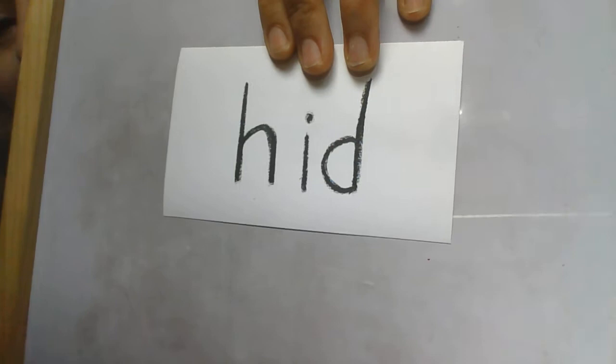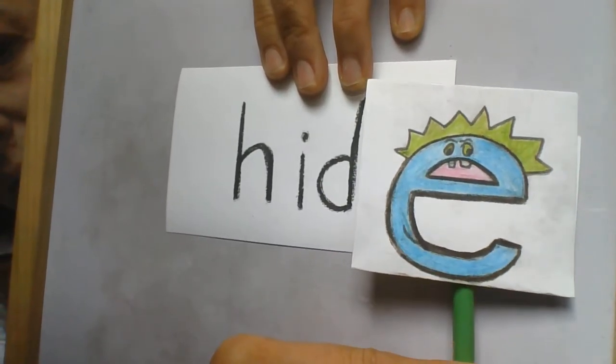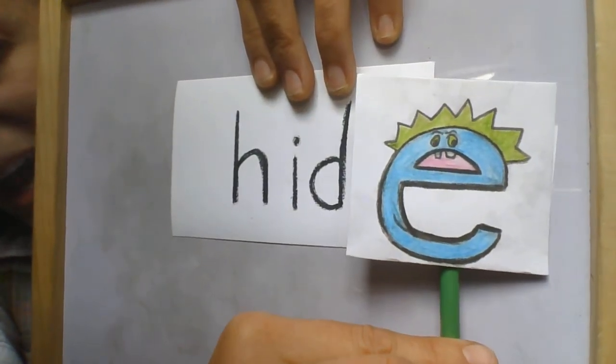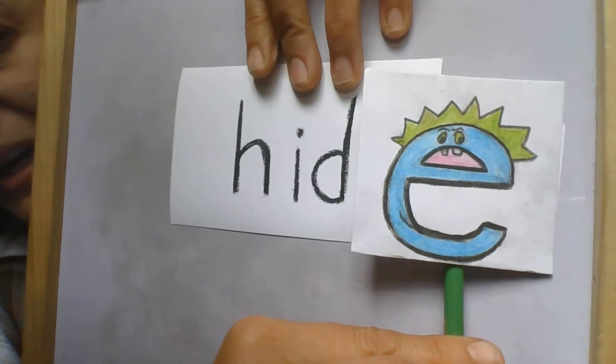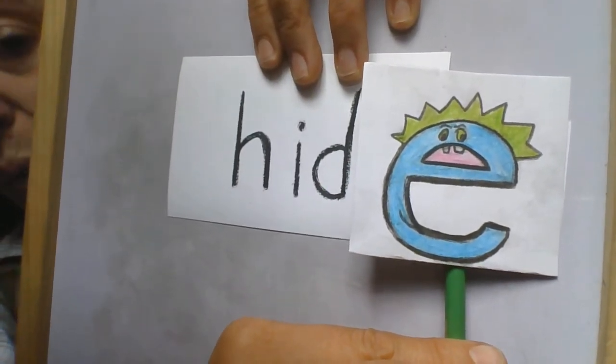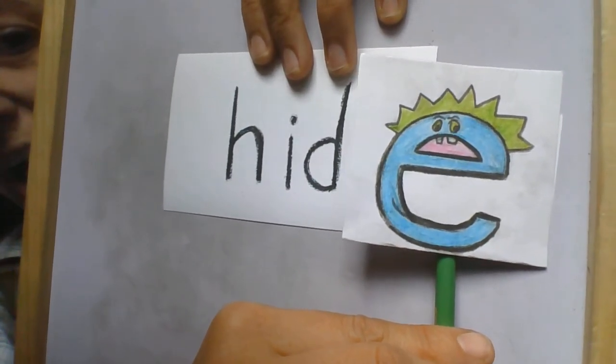But what if bossy E shows up? What does he do? He says to I, say your name. And I has to say his name. H, i, d. Hide. What's the word? Hide. What's the word? Hide.